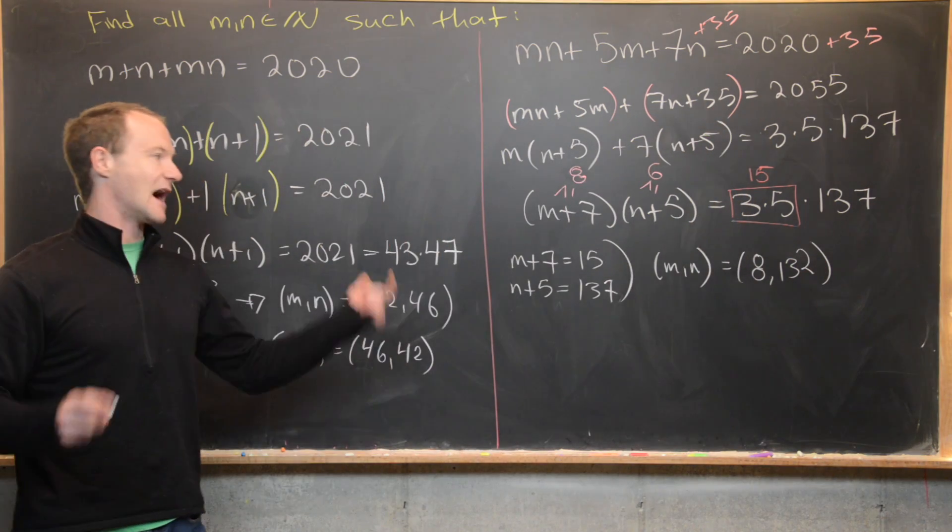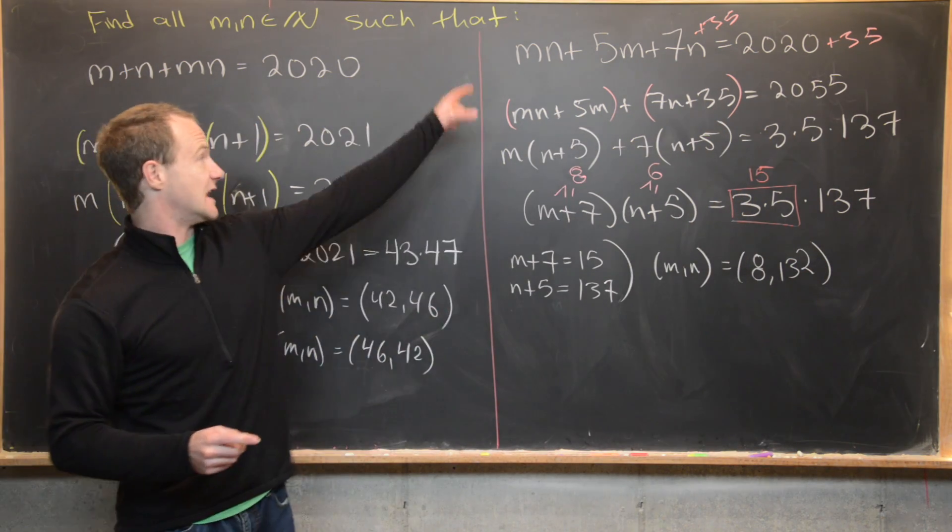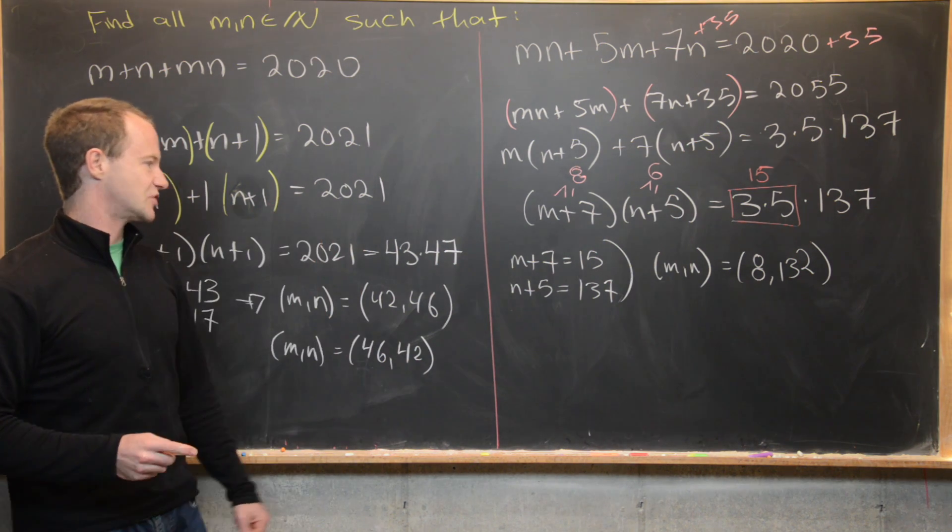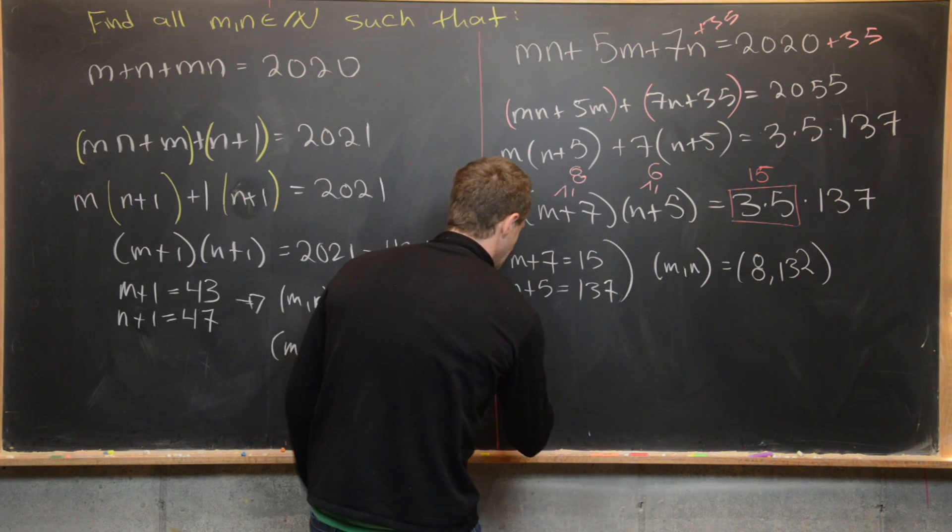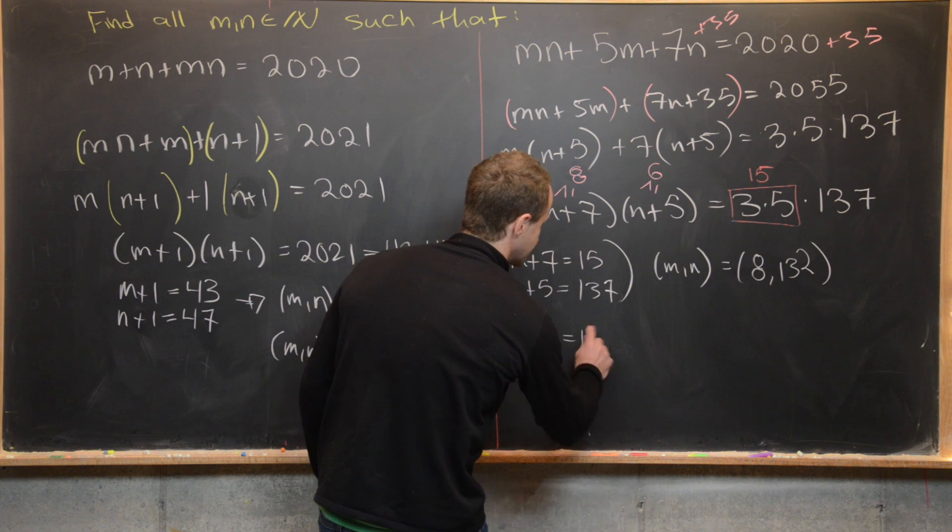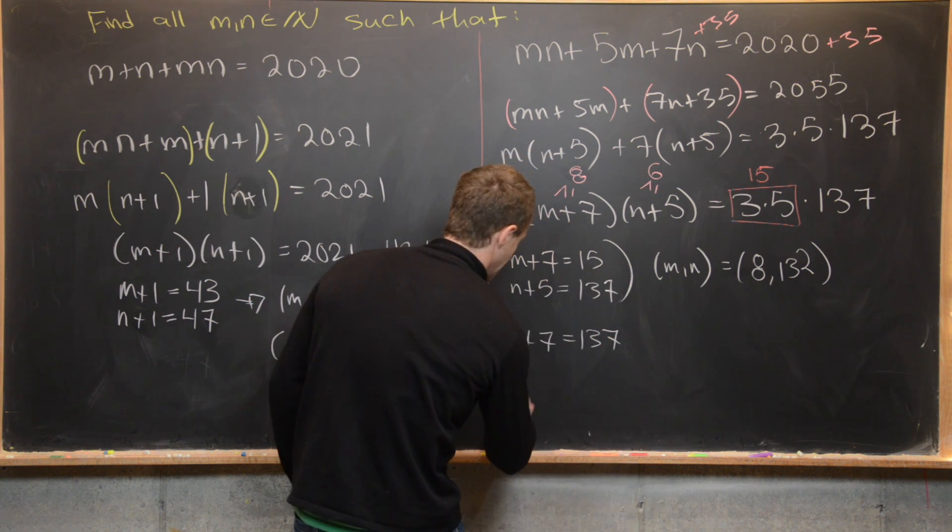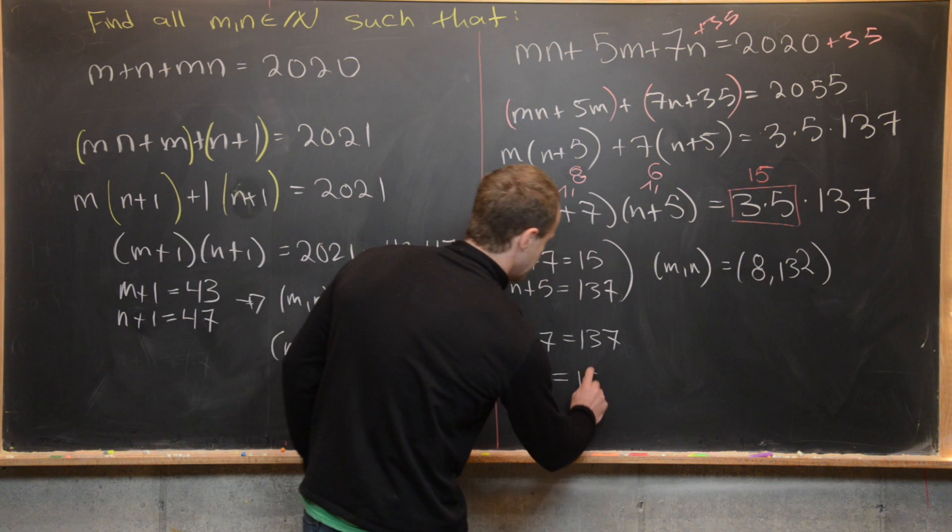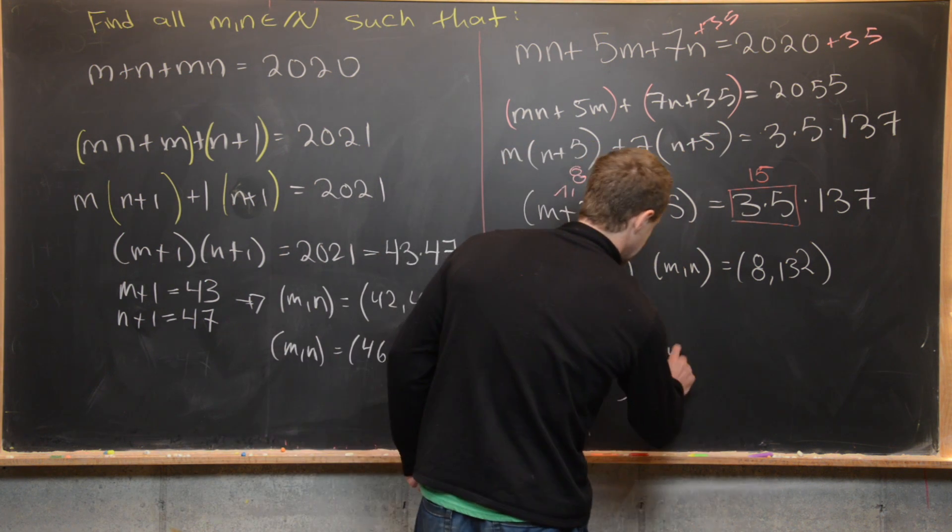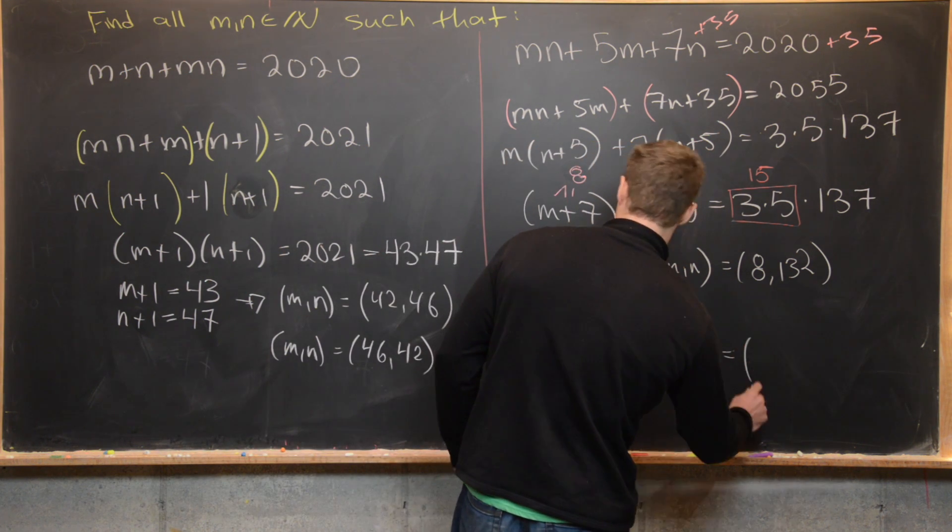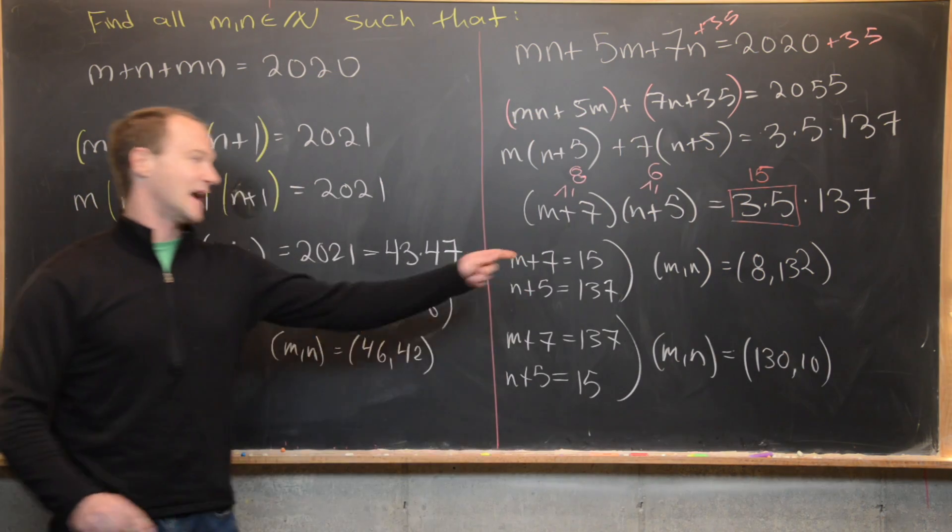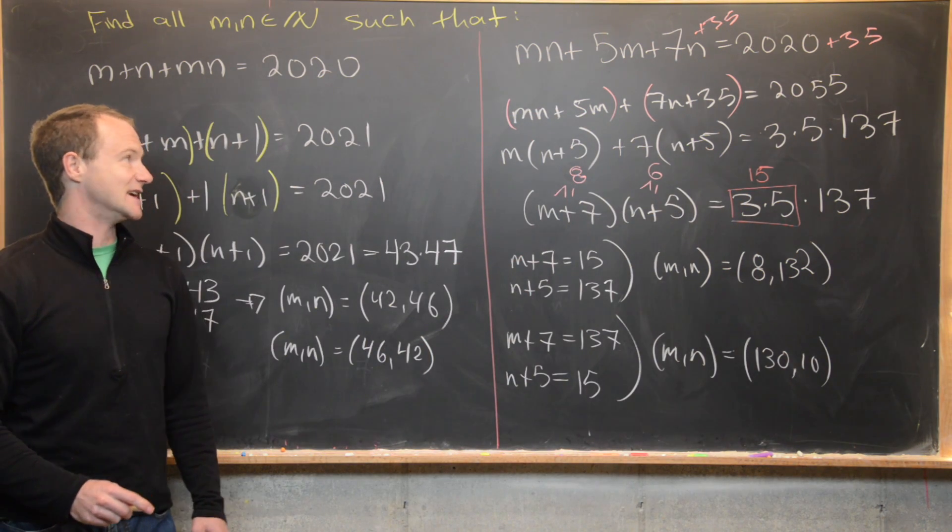Or we could have the other case. And notice that m and n are not symmetric in this equation, so we can't do the same trick that we did over here. We could have m plus 7 equals 137, and then n plus 5 equals 15. So that's going to tell us that (m, n) is (130, 10). So that gives us our two solutions in this case as well.